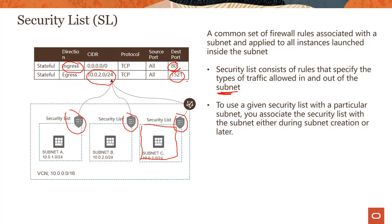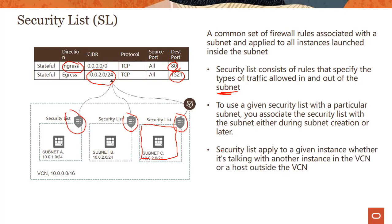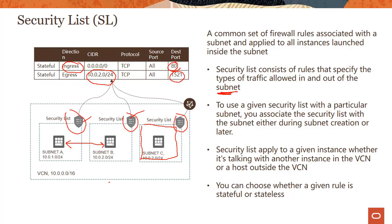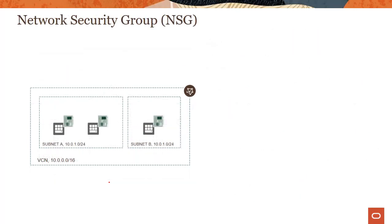To use a security list with a particular subnet, you associate the security list with the subnet either during the creation process or later. When creating a subnet you can attach an existing security list or use the default one, and you can always change it later. Security list rules apply to a given instance whether it's talking with another instance in the VCN or a host outside the VCN. You can also decide whether a given rule is stateful or stateless.